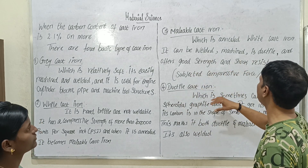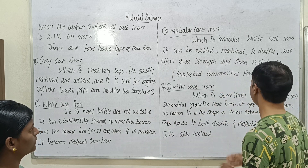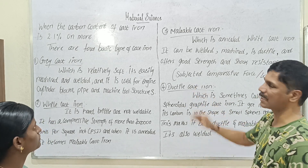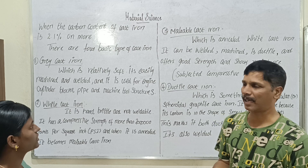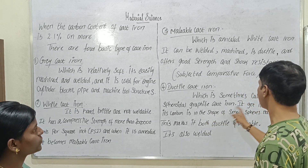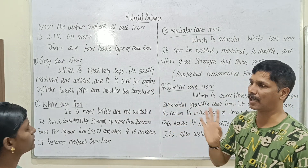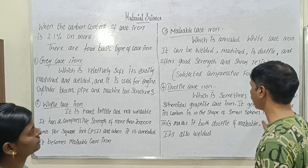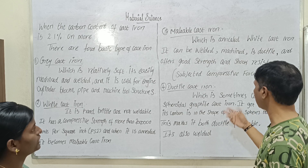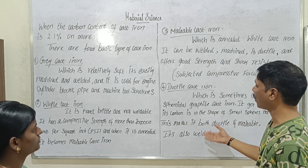After annealing it has good strength and soft resistance. What is ductile cast iron? It is also called nodular or spheroidal cast iron. In gray cast iron the graphite is in flakes, but in ductile cast iron the graphite is in small spheres. This makes it both ductile and malleable, and also weldable.